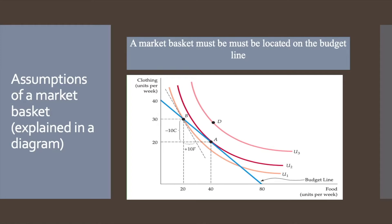In the figure we can see that the consumer's market basket consists of clothing and food. Any market basket to the right of and above the budget line cannot be purchased with the available income. So indifference curve U3 is unaffordable to the consumer as it lies above the budget line. Thus the only rational and feasible choice is a basket on the budget line, such as on U2 or U1.